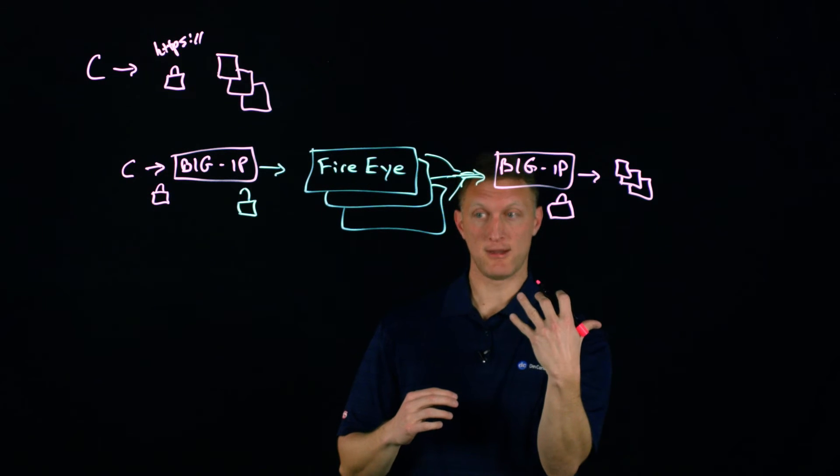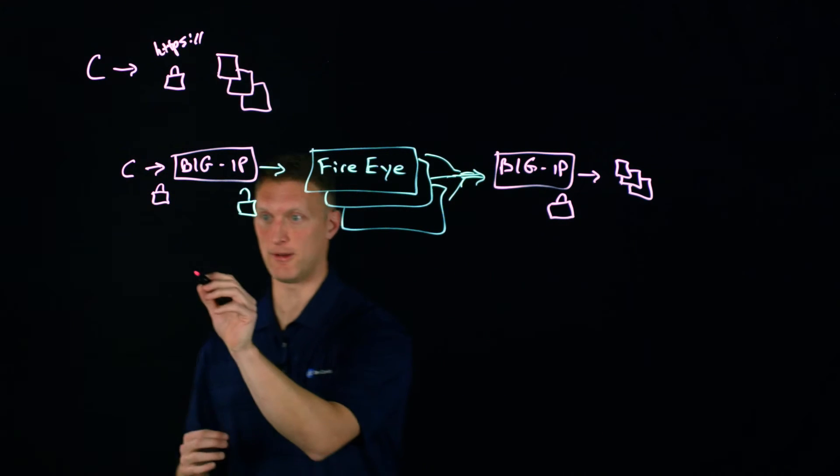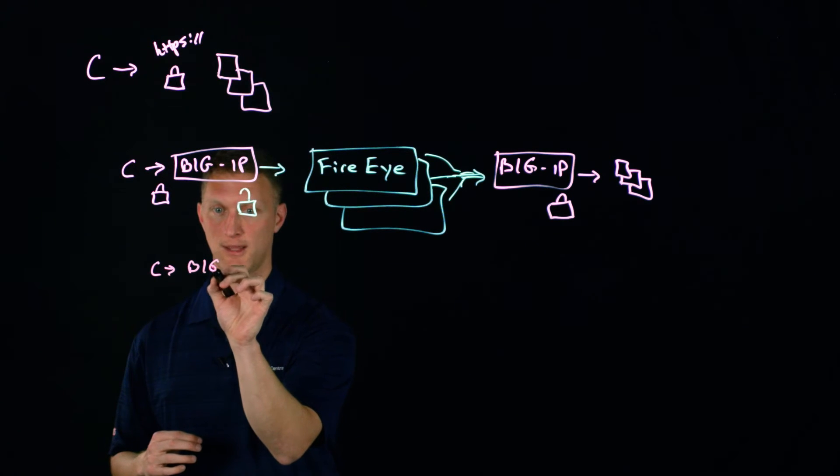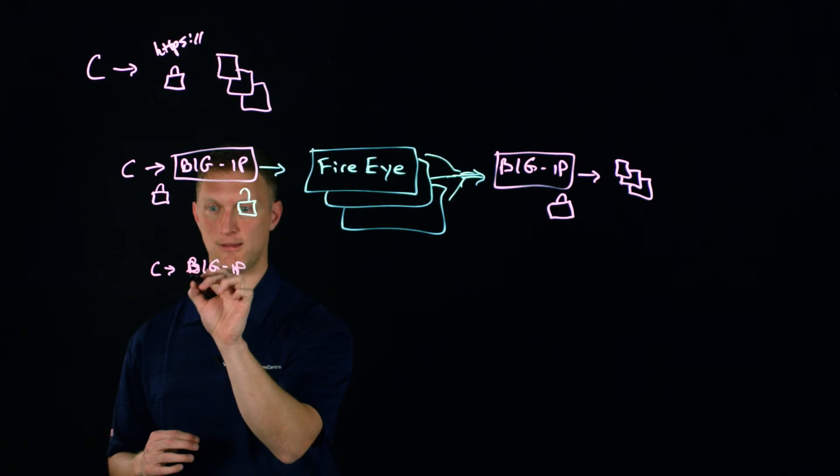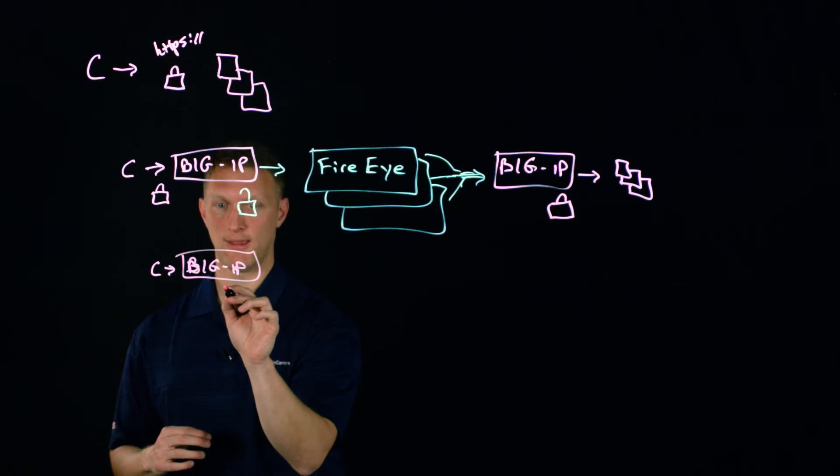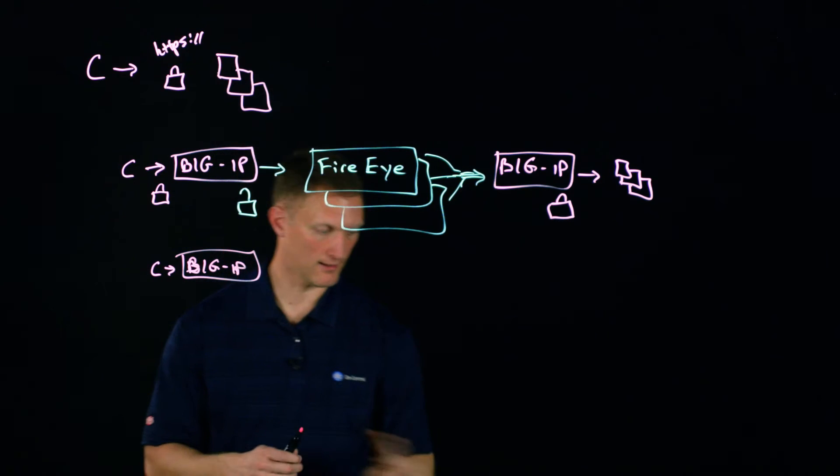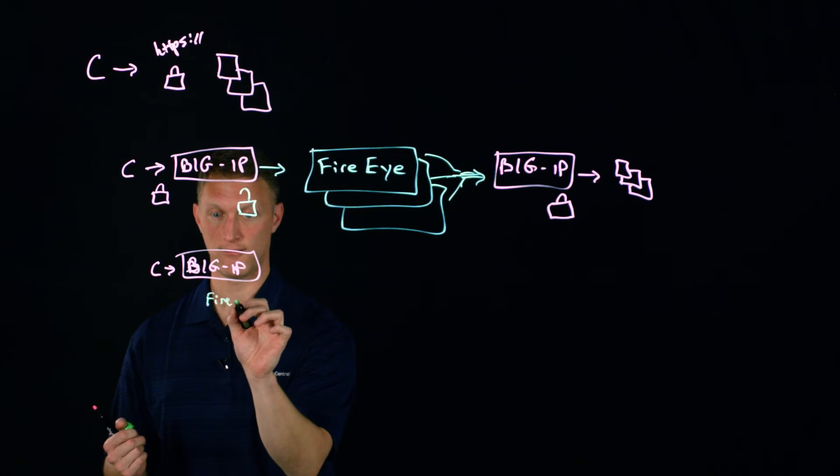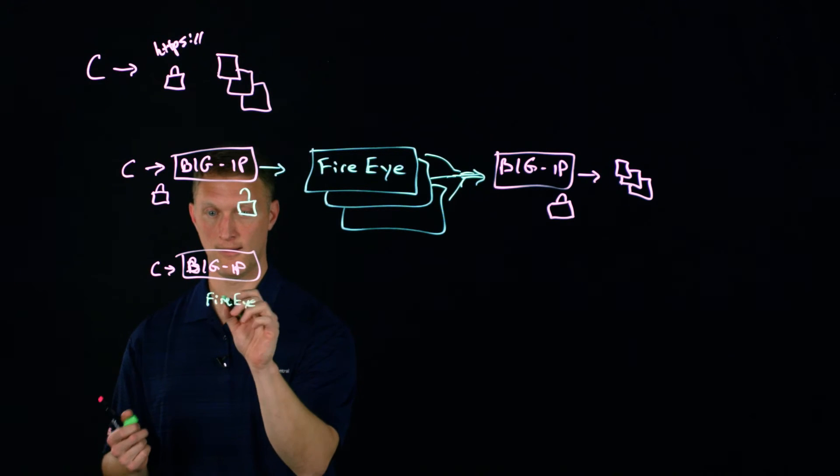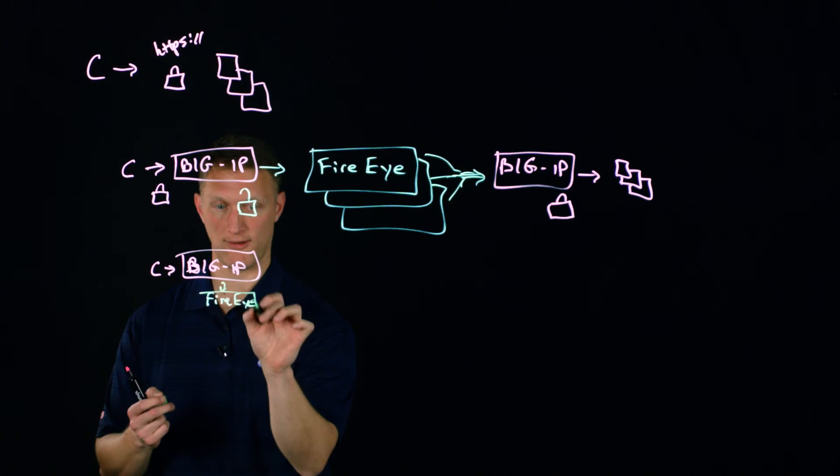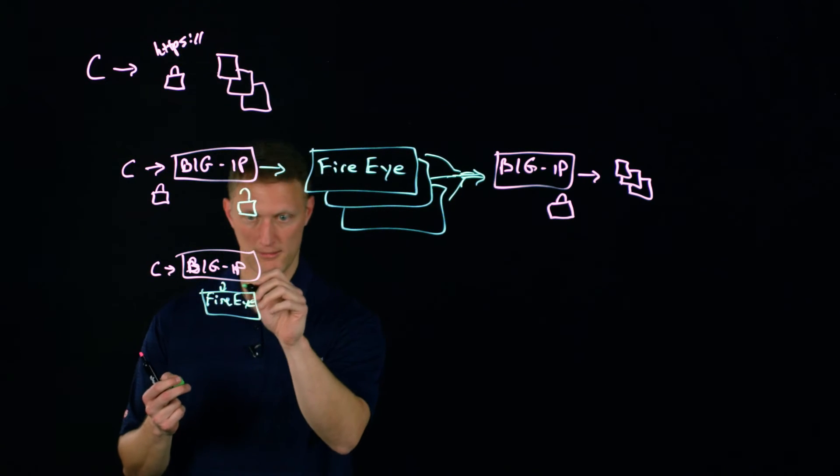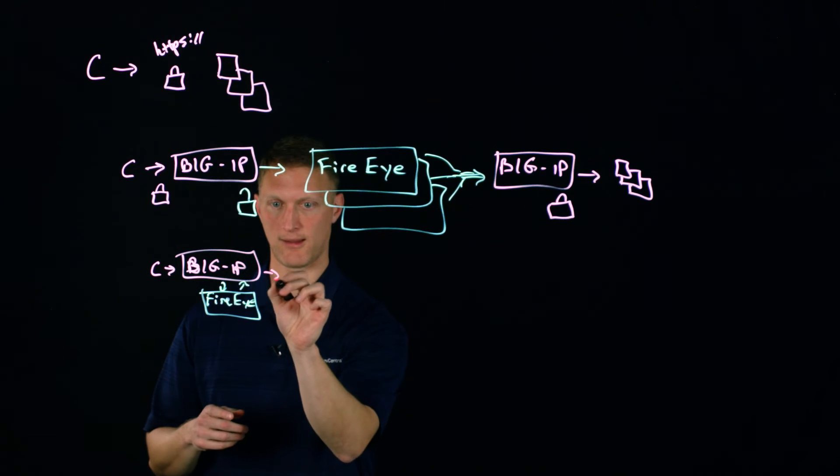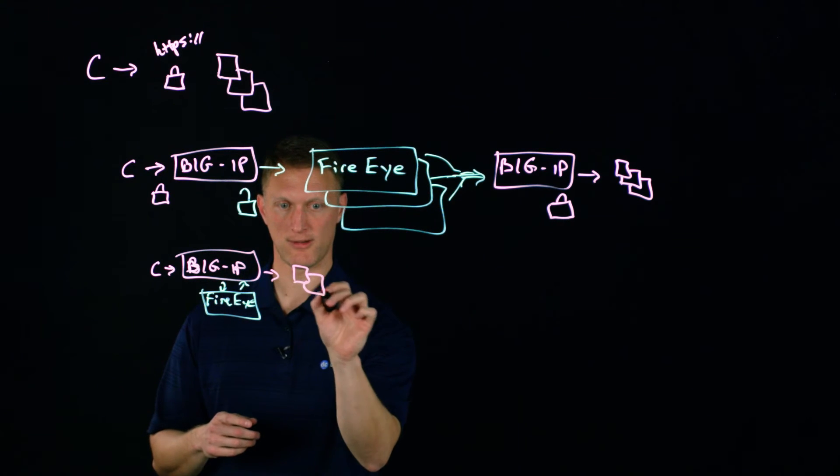If you only want to use one BigIP, you can also do that. I'll draw a quick picture. Client comes into BigIP, and then the FireEye is going to sit in line down here. The BigIP is going to decrypt the traffic again. The decryption happens, the traffic is sent down to the FireEye and the FireEye does what it does. It sends it back up to the BigIP and then the BigIP re-encrypts and then back out to the web server.